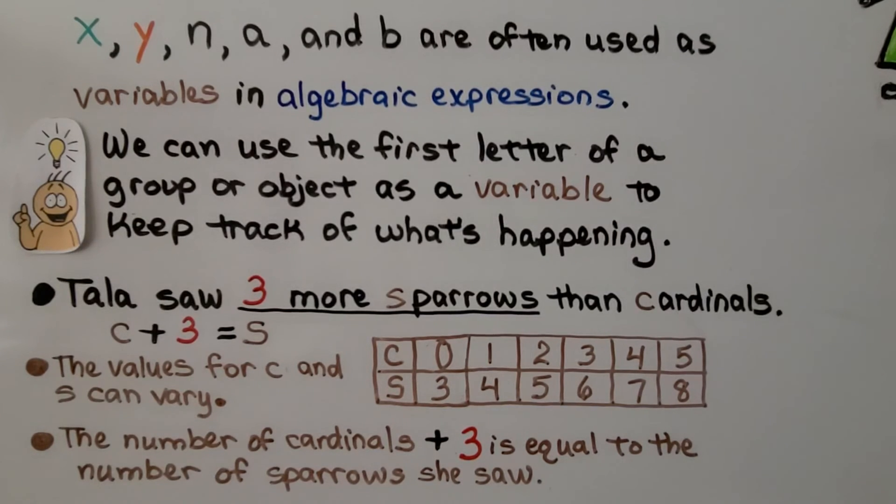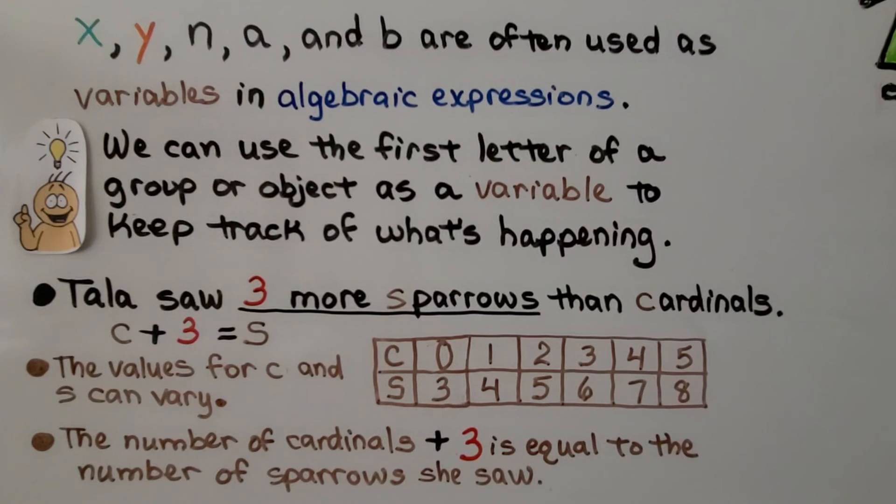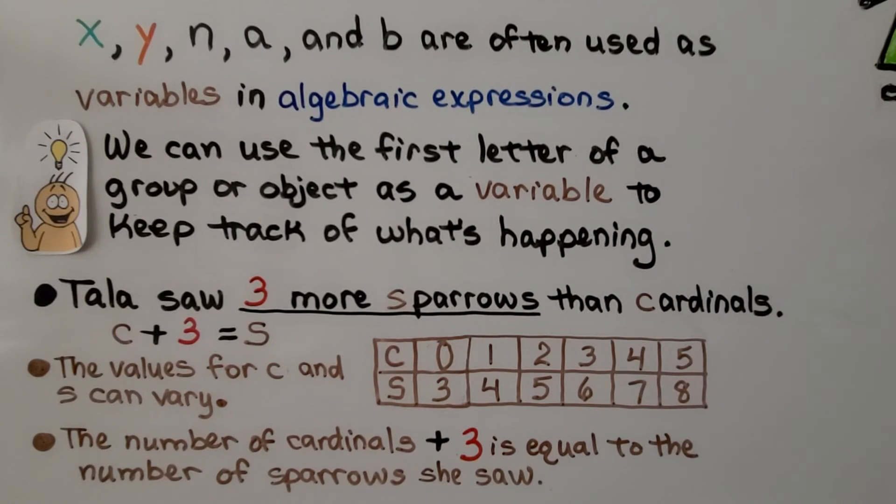x, y, n, a, and b are often used as variables in algebraic expressions. And we can use the first letter of a group or object as a variable to keep track of what's happening.